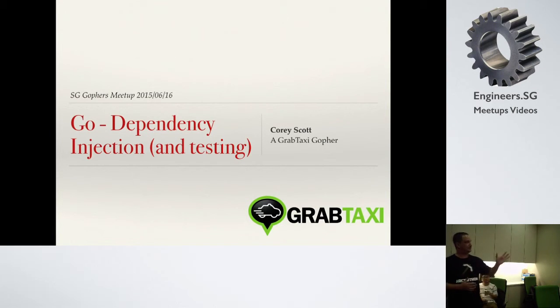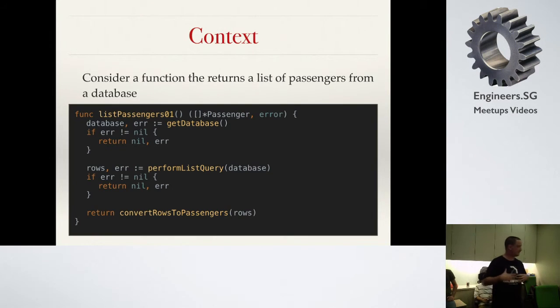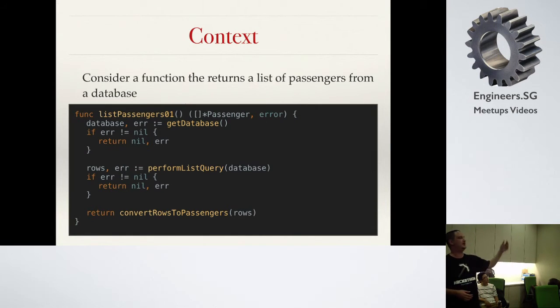To dive into it, the trick here is dependency injection, and in actual fact, dependency injection in terms of testing. Before you get all like that's got to be a crazy boring topic, hopefully it's not too bad. To give you a little bit of context, assume we have a function, pretty standard function, that pulls a list of passengers from the database. It's just going to hit the database, perform some kind of query, then take the rows object and convert it back into structs. Question then is, how do you test such a function?